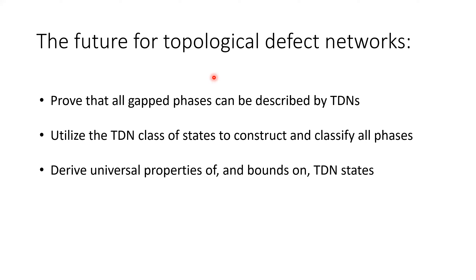We don't really have time for questions, but I'll ask one quick one: are these commuting Hamiltonians that you write down for all of these things? For the example I showed, yes. But this formalism actually goes beyond that because you can stick in chiral TQFT stuff on different layers, which would preclude a commuting projector Hamiltonian. If it's non-chiral, they're commuting — well, in a Levin-Wen sense where there's a low-energy sector where things commute. If you project everything into the sector where you have closed string diagrams, they commute there.